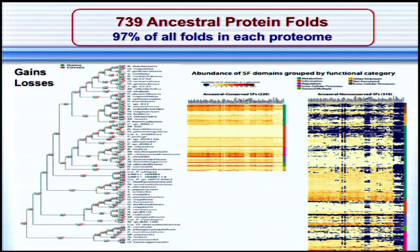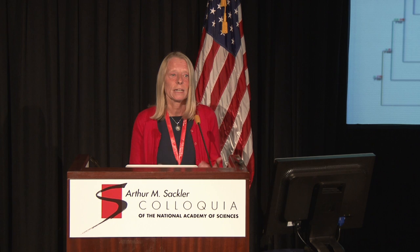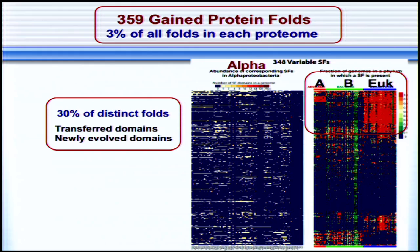We found that about a little more than 700 protein folds were ancestrally present in the alpha proteobacteria, representing about 97% of folds in each proteome. These are mostly protein folds related to information processes and energy-related processes. We also found about 300 protein folds with a more scattered distribution, representing about 3% of each proteome, but altogether about 30% of all distinct folds — these could be transferred folds, newly evolved folds, or perhaps false positives or negatives in our inference methods.